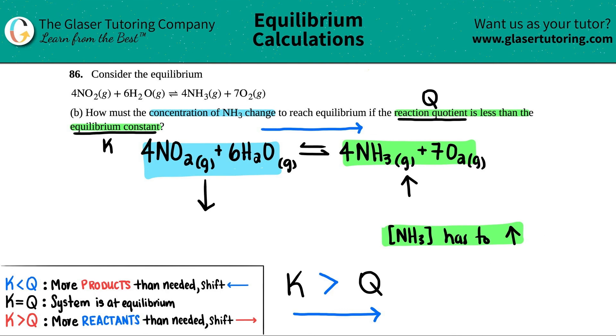So this is the answer. How must the concentration of NH3 change? It just has to increase. We don't know by how much. All we know is that it has to increase and that's it for part B.